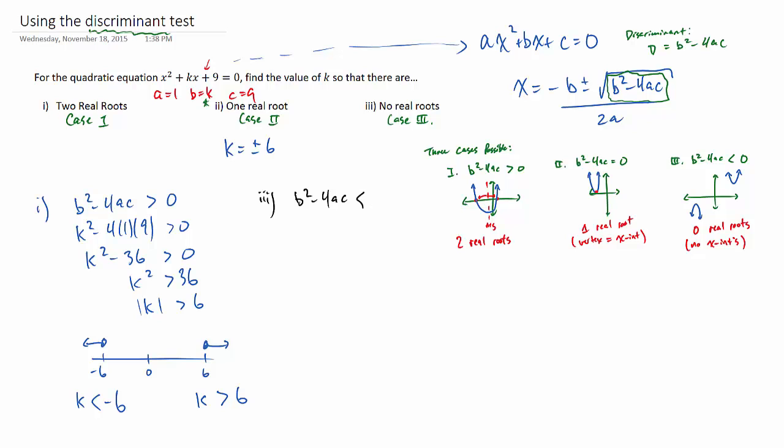And the last case is when we have no real roots. So that's when we have a negative discriminant. It's just sort of the opposite of what we just did. What we need is to have k less than six, or really what we mean is it's in between negative six and six. So as long as its absolute value is in between six and negative six, then we'll have no real roots.